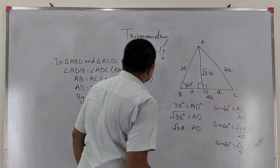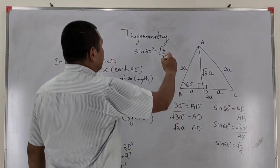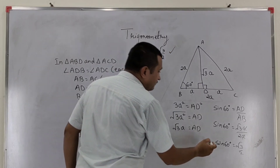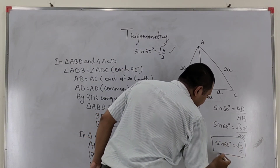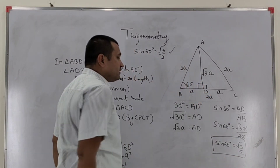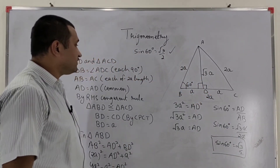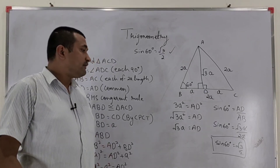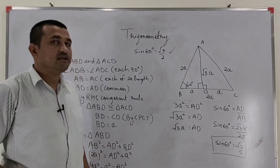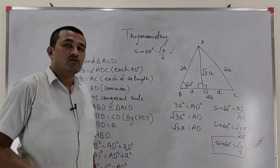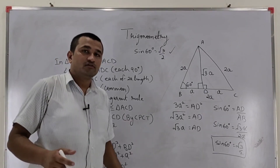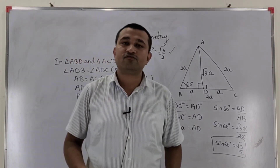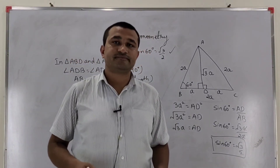So this is what I wanted to prove. It is proved here that sine 60 degree value is root 3 upon 2. This was a small demo video where I proved sine 60 degree equals root 3 upon 2. Thanks for watching this.